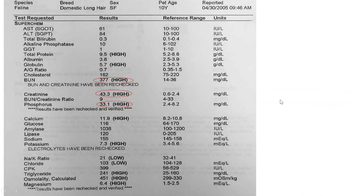Here is an example diagnostic form showing a SuperChem blood chemistry panel. As you can see, the BUN levels are high and the creatinine levels are high — those are some of the things you might see with chronic kidney disease.